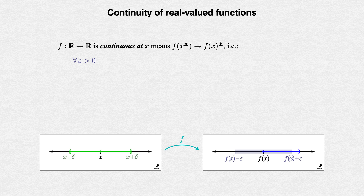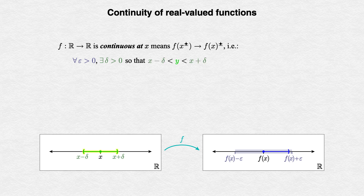Given that target, we need to squeeze our input interval far enough that all of the points in that interval land inside the target in the codomain. Some such positive distance delta must exist, so we continue the definition with 'there exists delta greater than zero.' Let's use y to represent each of the input points we see. x and y both represent points in the domain. We finish by saying that if y is between x minus delta and x plus delta, then the corresponding output f(y) lands inside the target: f(y) is between f(x) minus epsilon and f(x) plus epsilon.